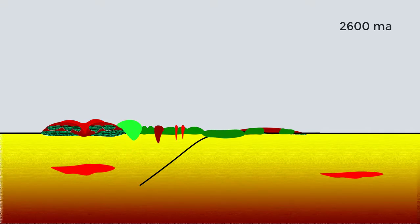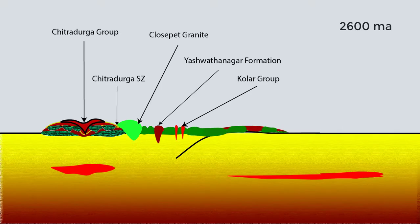Now as subduction continued, Eastern Dharwar Craton was sutured with Western Dharwar Craton along Closepet granite.